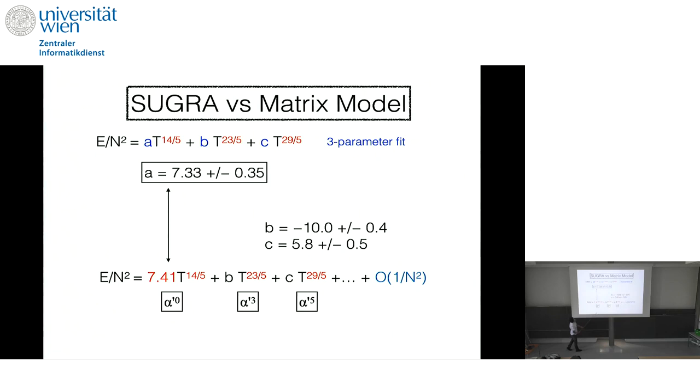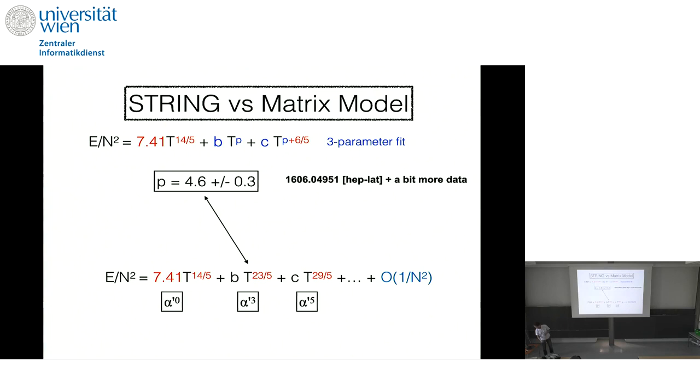And the first, our first goal was to see if we could reproduce this 7.4. Reproducing this power is more challenging. So this was our first target. And so we did this three parameter fit. And we could get the result which is consistent, 7.41. And as a bonus, we could also determine this. Which sort of give a prediction for stringy.